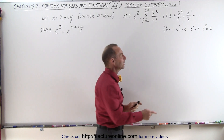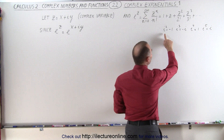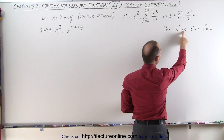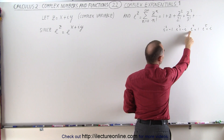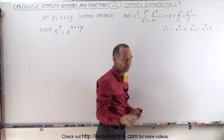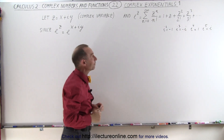We also need to keep in mind that i squared is negative 1, i cubed is negative i, i to the 4th is 1, and so forth — because we're going to need that.